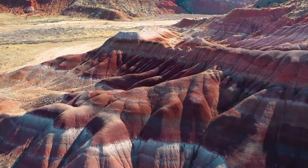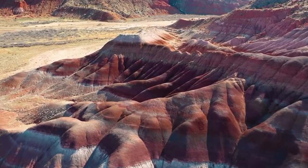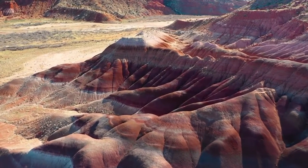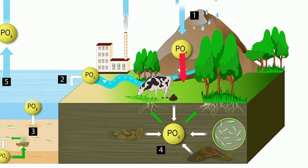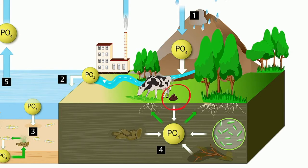As rocks weather and wear down over long time periods, the phosphorus they contain slowly leaches into the surface water and soils. Volcanic ash and fertilizer can also be significant phosphate sources. Phosphate compounds in the soil can be taken up by plants and, from there, transferred to animals that eat the plants. When plants and animals excrete waste or die, phosphates may be taken up by detritivores — such as worms — or returned to the soil.